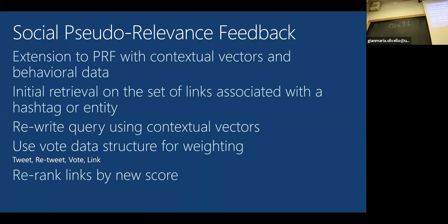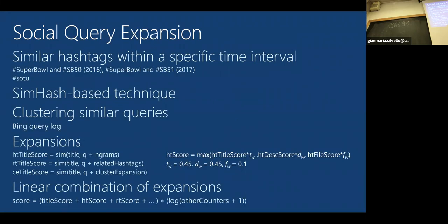For social query expansion, we extract similar hashtags within a specific time interval. For example, you may have hashtag 'Super Bowl' and at the same time #SB50—for 2016 these have the same semantic meaning. Move forward to 2017 and it's still 'Super Bowl' but now it's called #SB51. The Twitter community assigns these names per game.